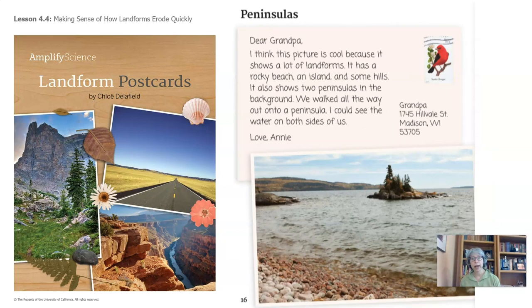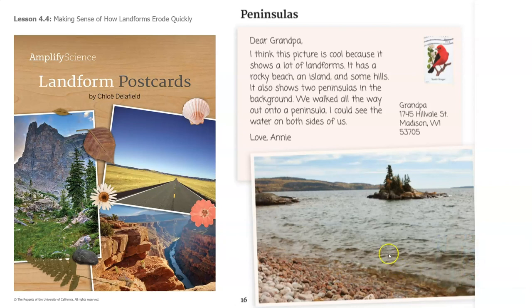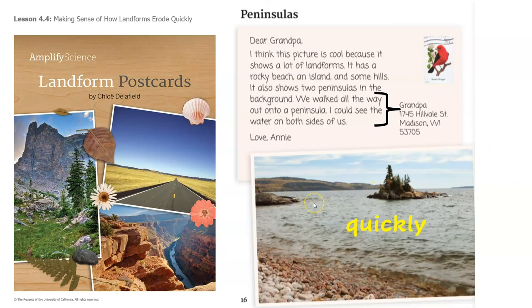Let's take a look at page 16. We walked all the way out onto a peninsula — I could see the water on both sides of us, Annie writes to her grandpa. So this is a peninsula, and there's water all around it. Do you think these peninsulas erode quickly or slowly? Quickly — in fact, I'm wondering if these two peninsulas were connected together at one point, and the water actually eroded it from both sides.